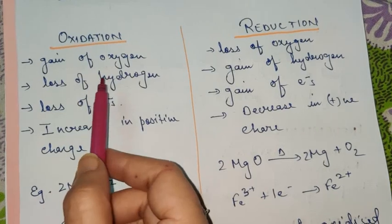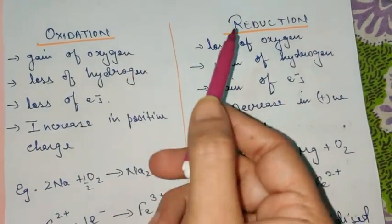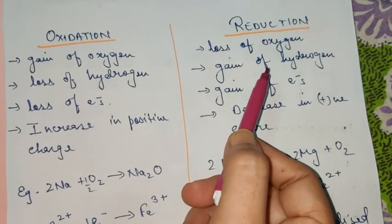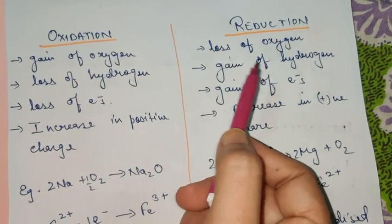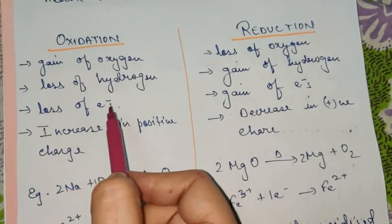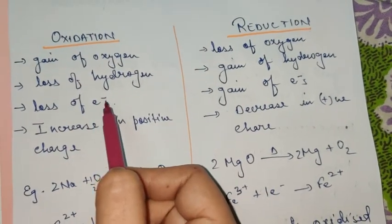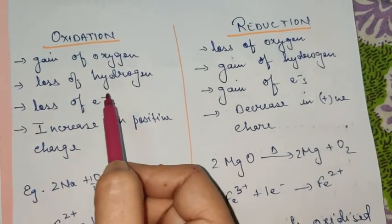Contrary to this, oxidation also means loss of hydrogen, and reduction means gain of hydrogen. Furthermore, oxidation means loss of electron.